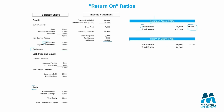Then we have the return on equity ratio. Within equity we have common stock issued and retained earnings. We're trying to figure out how much money that's helping us generate. With net income of $49,500 and total equity of $70,000, for every $1 kept in equity, we make 70.7 cents of net income. To change equity, you could issue more stock or keep more retained earnings, or reduce equity by paying out more dividends to stockholders.